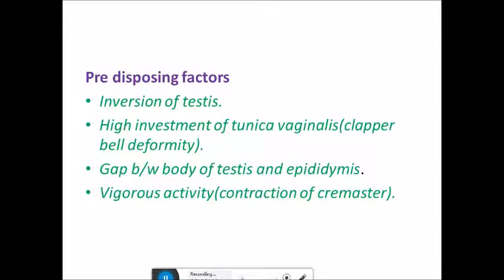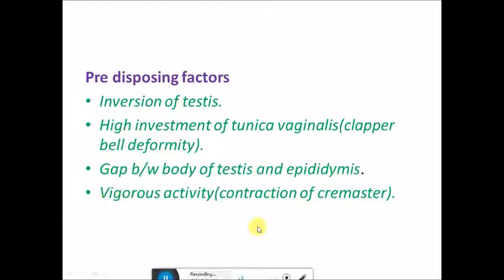The predisposing factors for torsion are: inversion of testes; high investment of tunica vaginalis, also called bell-clapper deformity, which leads to a lot of space between the testes and epididymis, making twisting more likely; and any vigorous activity which leads to contraction of the cremaster muscle may also lead to testicular torsion.